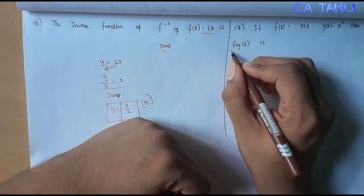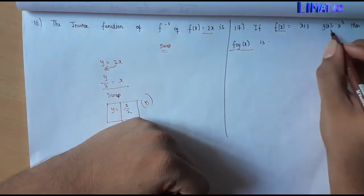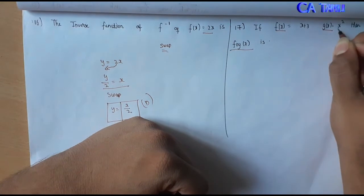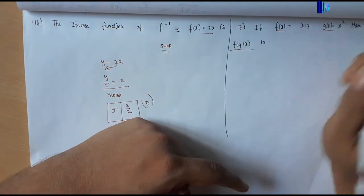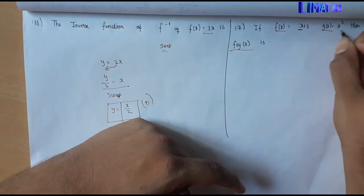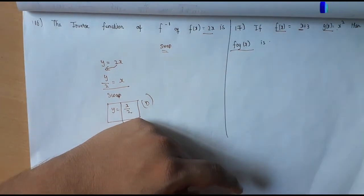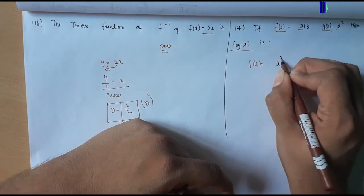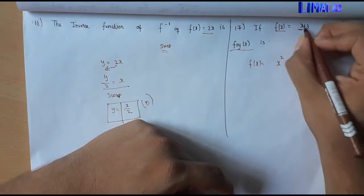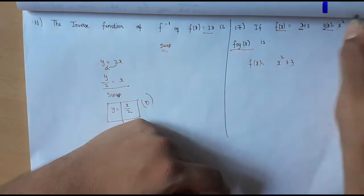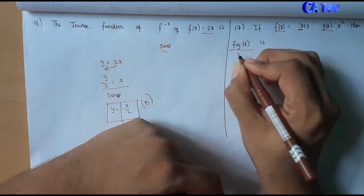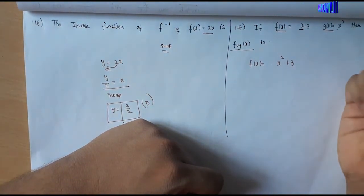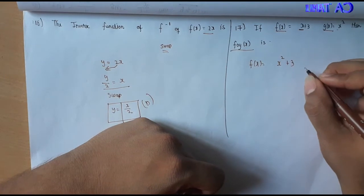This is sum number 16. Sum number 17: we will find fog of x. f of x equals x squared. The fog of x final answer is x squared plus 3. So the answer is option A.